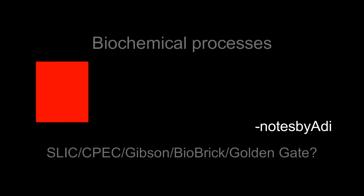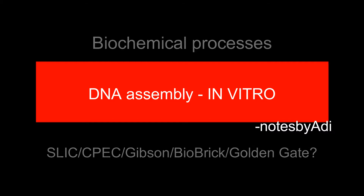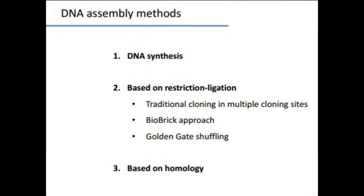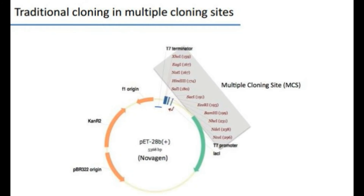DNA can be assembled based on the restriction and ligation methods. Traditional cloning in multiple cloning sites works well for a single coding sequence, but an iterative process is needed for multiple fragments. It is very laborious and it is unlikely that multiple fragments can be inserted. Moreover, there is no high-throughput approach, and various scars at all restriction sites can be created, which is not preferable because scars can be heavy and large.